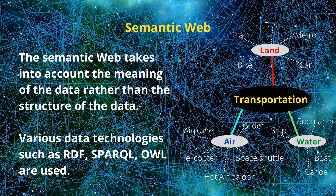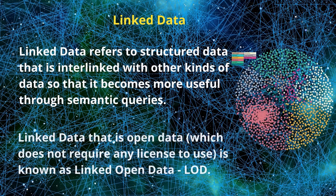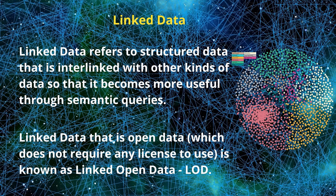Semantic queries work on named graphs, linked data, or triplets. This enables the query to process the relation between information and infer the answer from the network of data. Linked data refers to structured data that is interlinked with other kinds of data so that it becomes more useful through semantic queries. Linked data may also be open data, in which case it is referred to as Linked Open Data or LOD. Linked Open Data enables both people and machines to access data across different servers and interpret its semantics more easily.